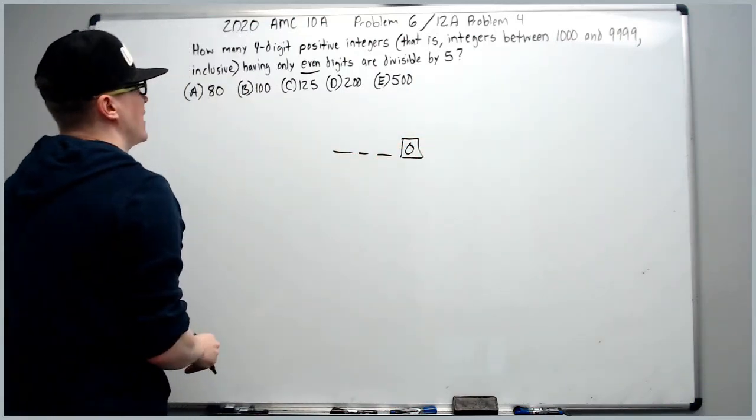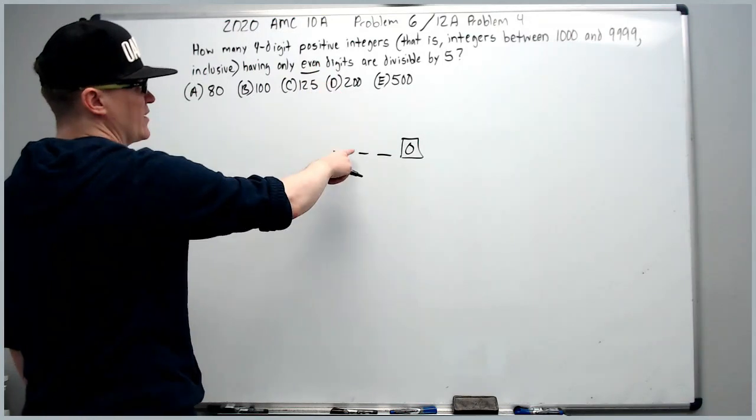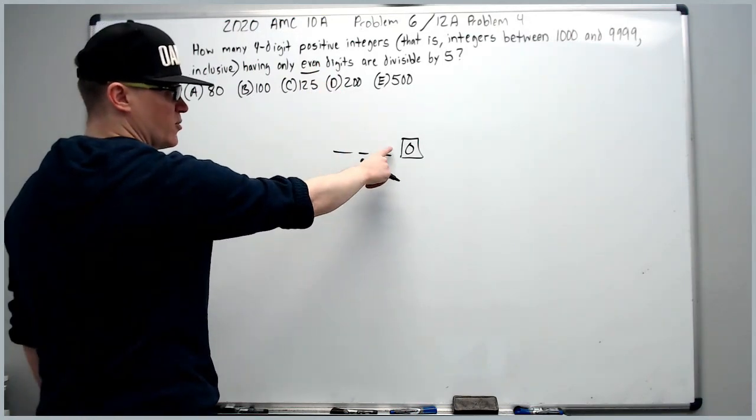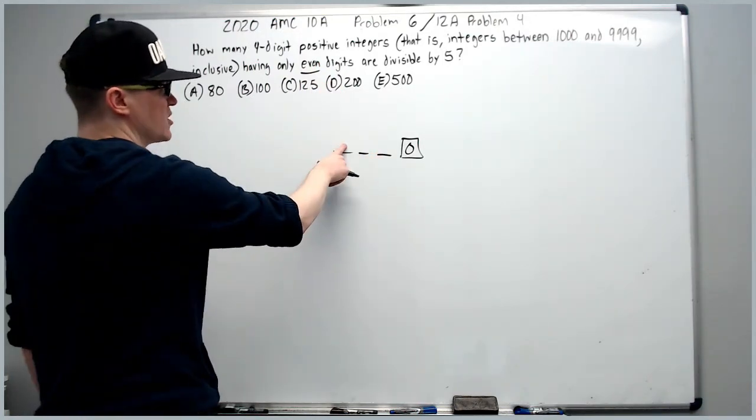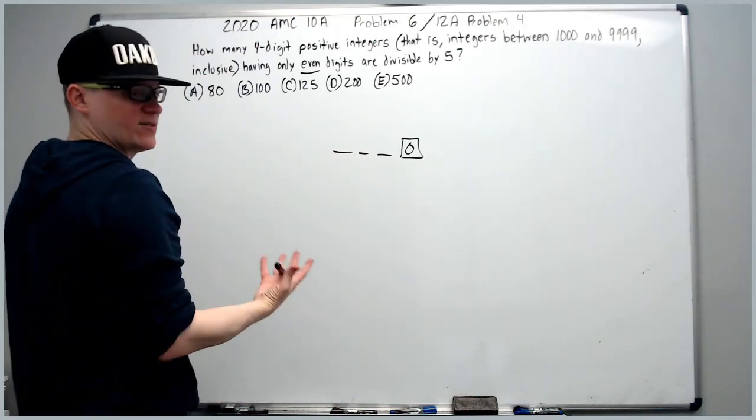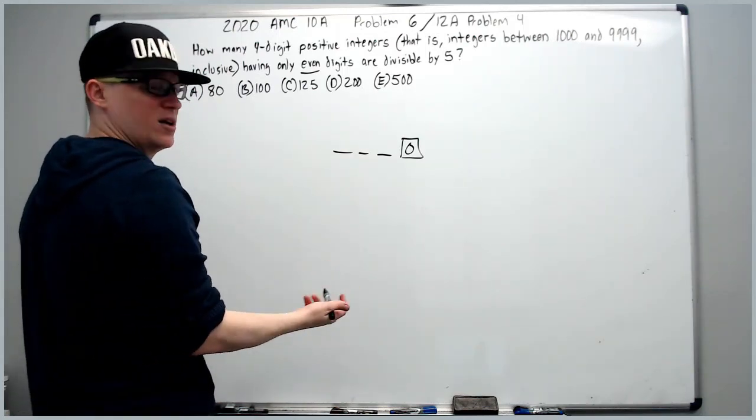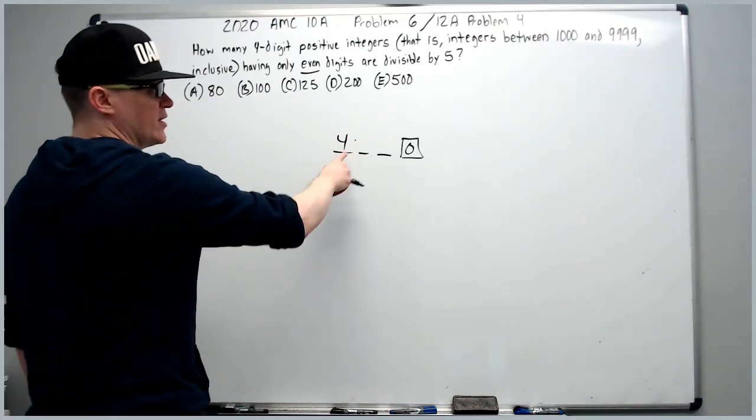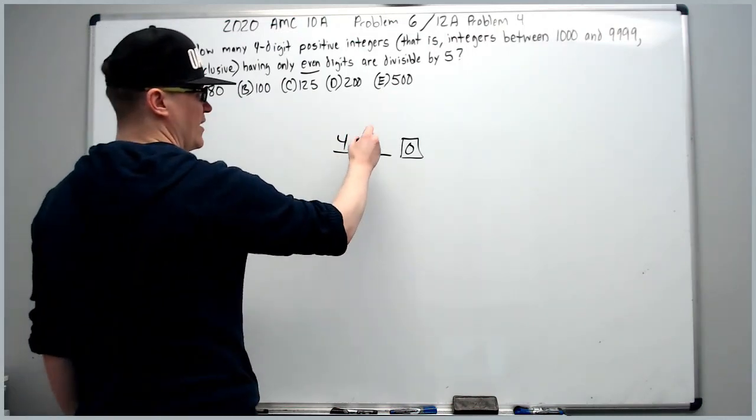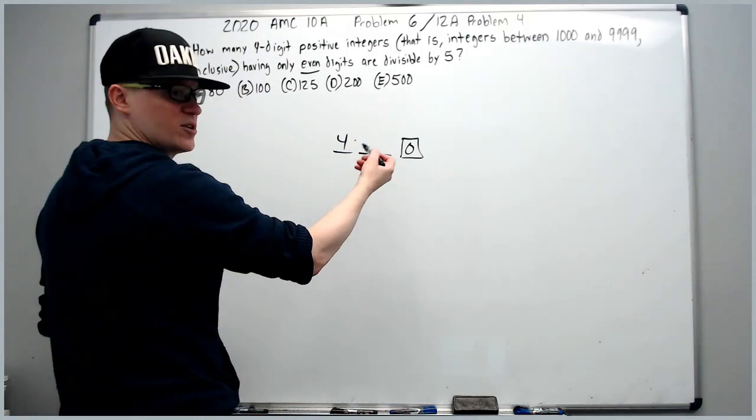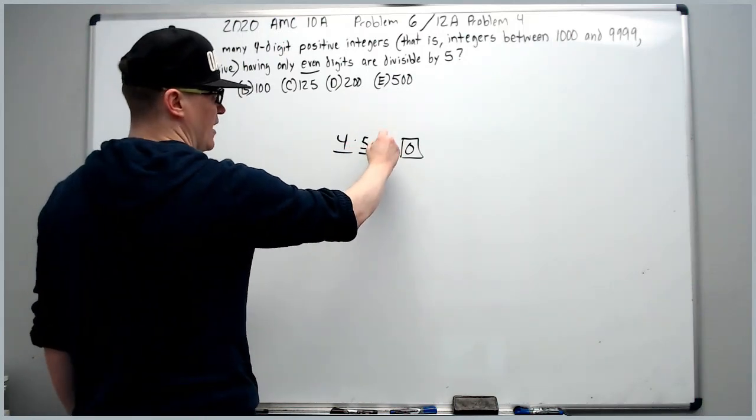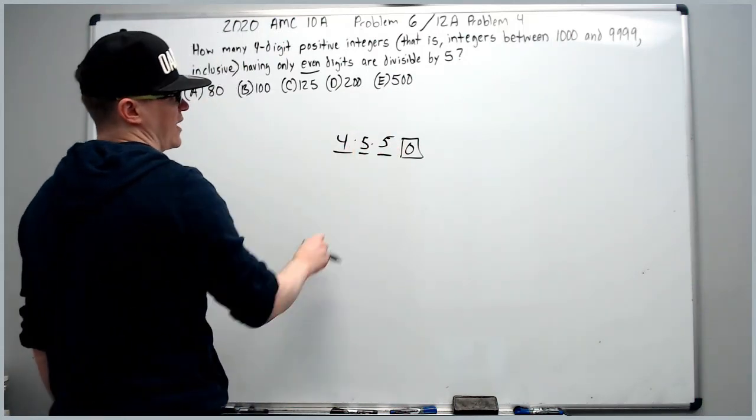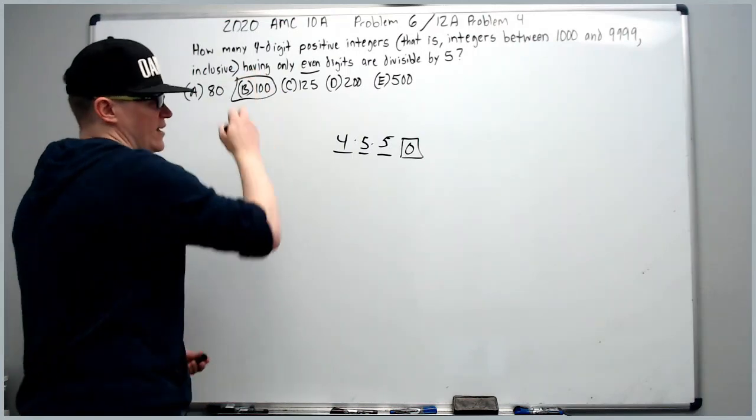So then we have to say how many four digit, we have to have only even digits in these three positions. So in the first position, you cannot have zero, you have to have two, four, six, or eight, there's four choices. The next two, you can have zero through eight. That's fine. That's zero, two, four, six, eight. That's five choices and five choices. Four times 25 is 100.